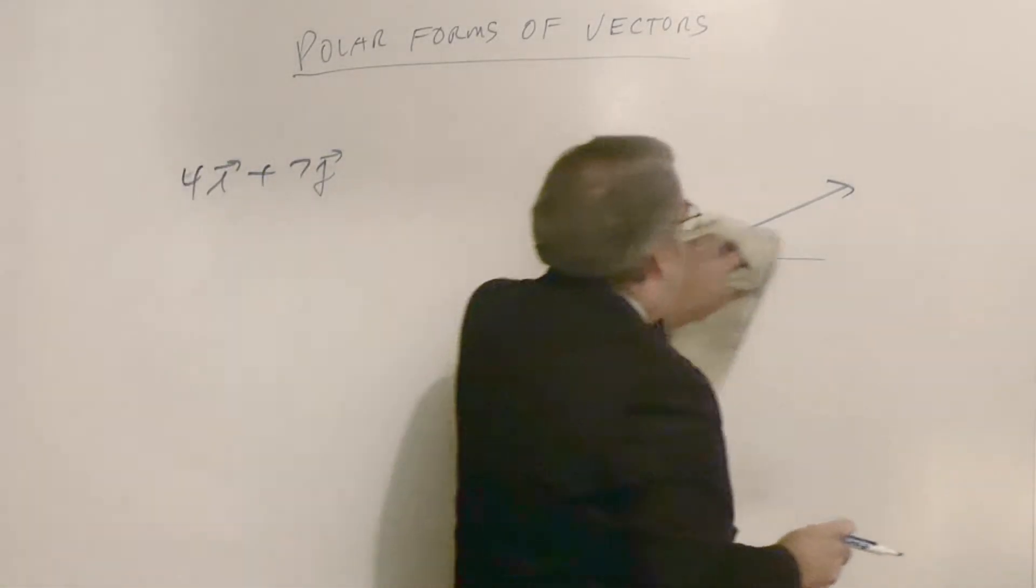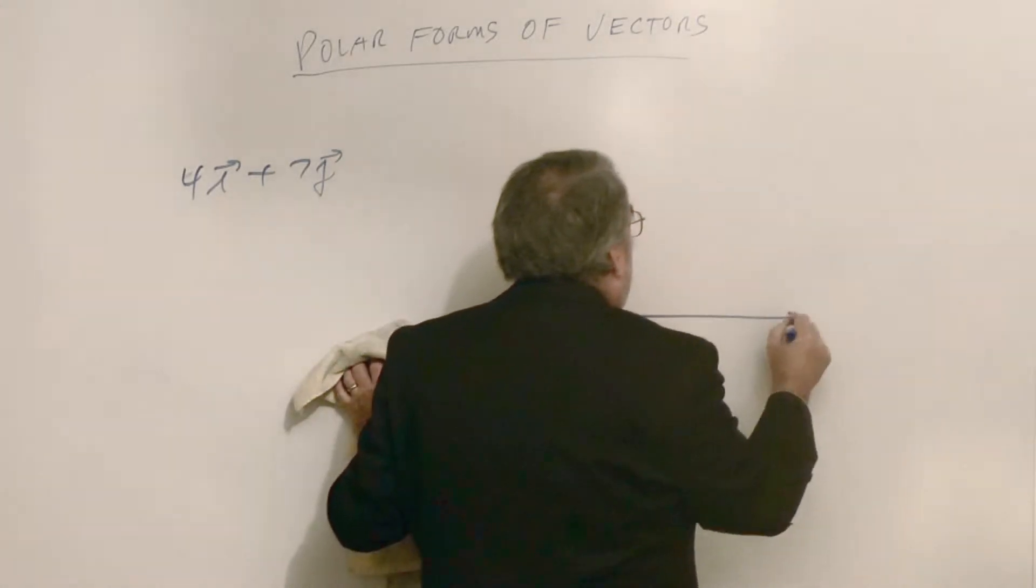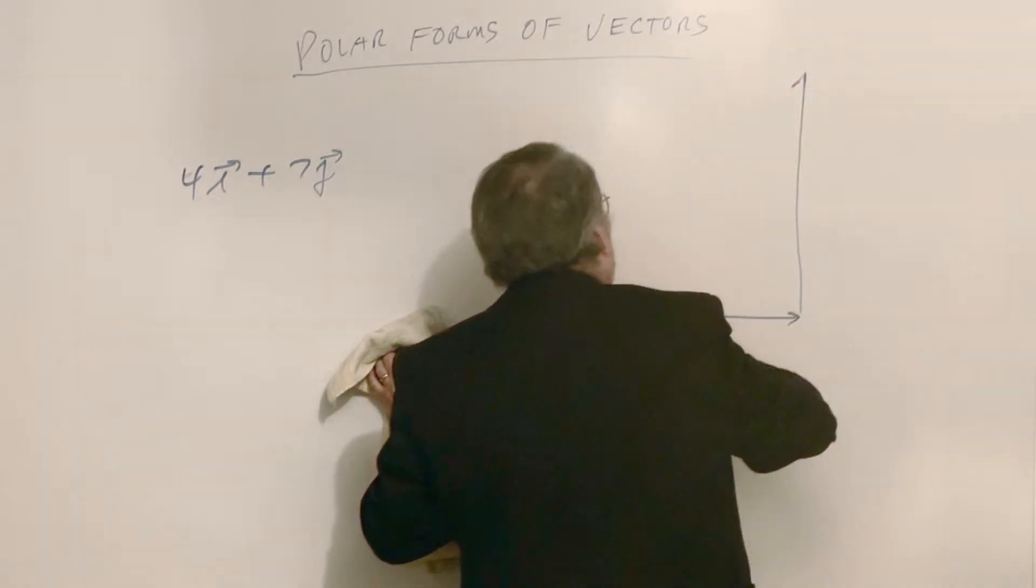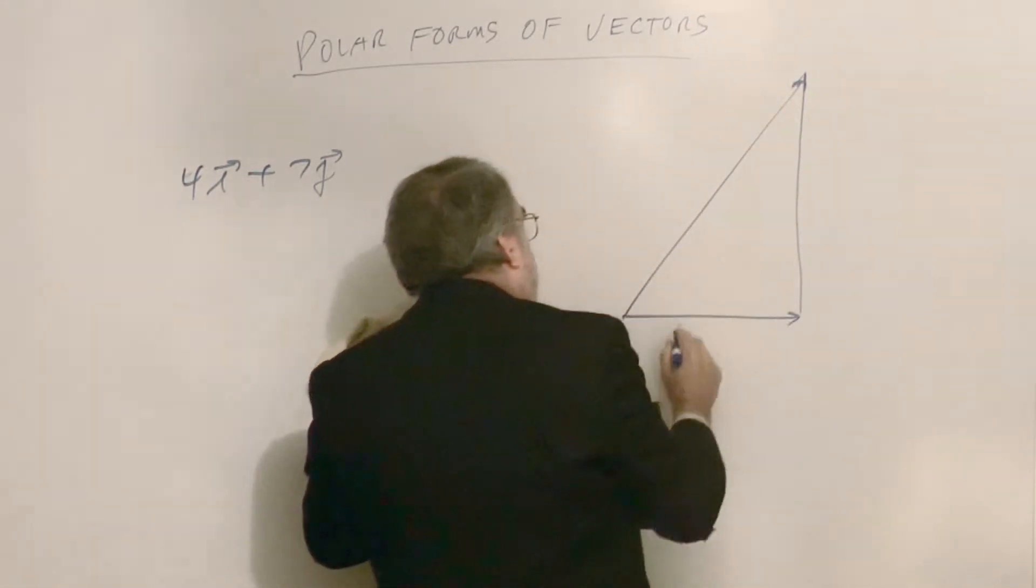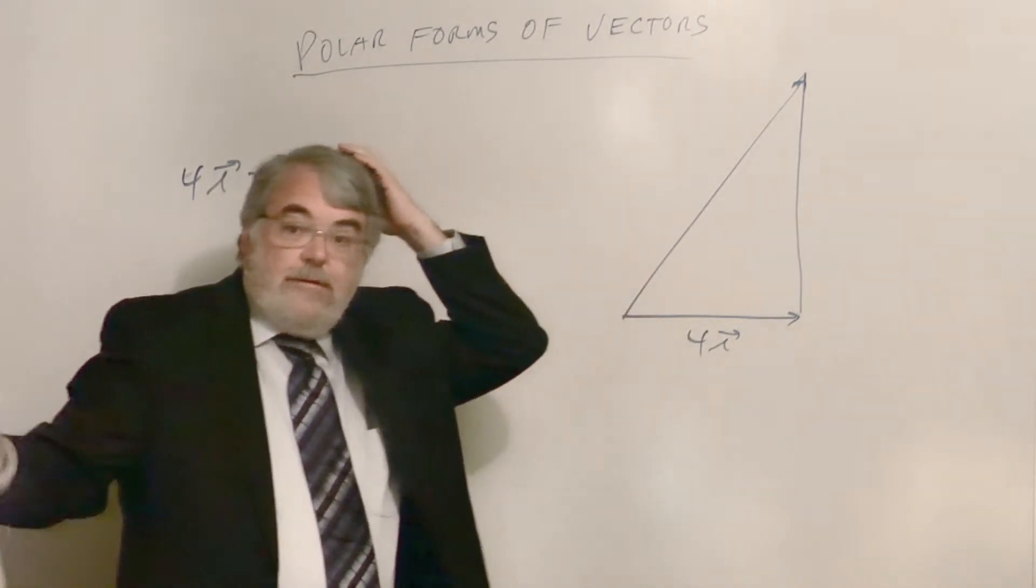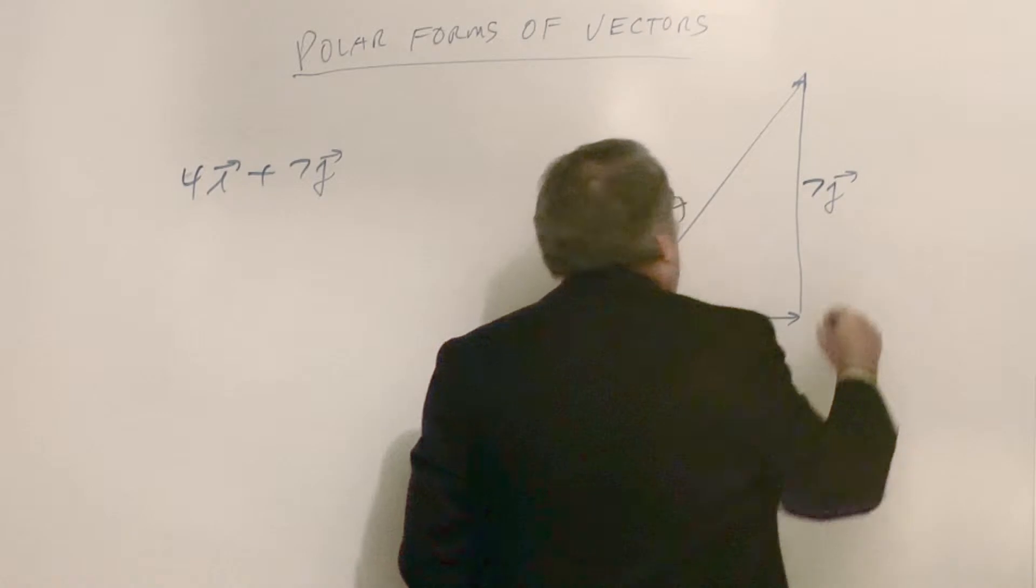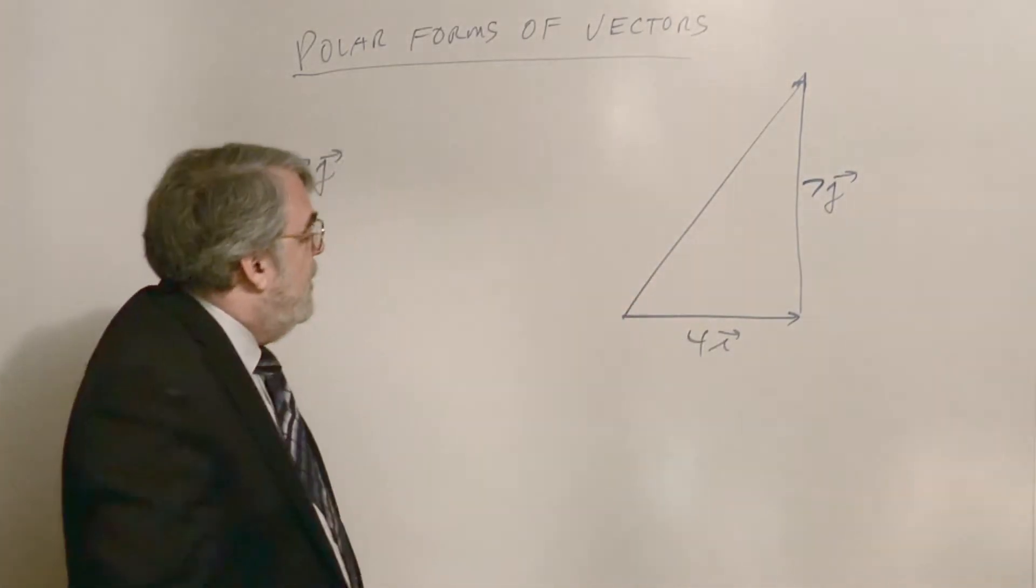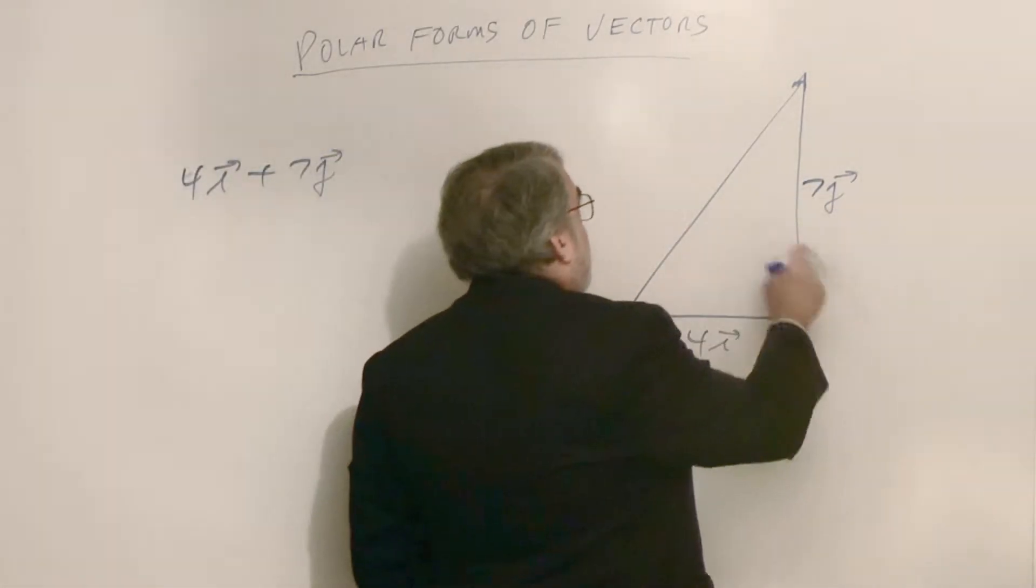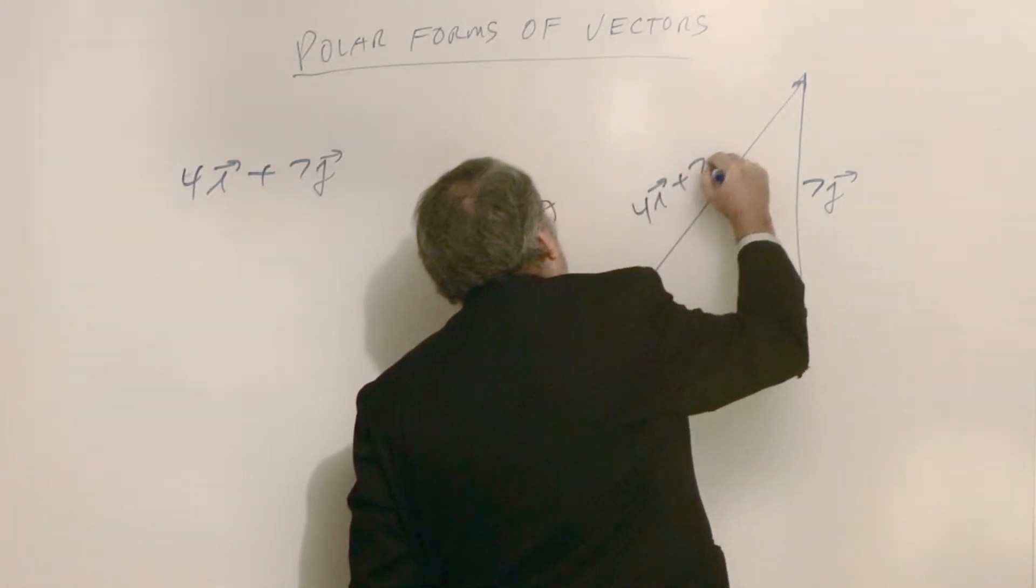And so, if I have a vector that is 4i plus 7j, literally this is 4i, 4 units in the positive x direction, and 7 units in the positive vertical direction. 4i plus 7j gives me this resultant vector, 4i plus 7j.